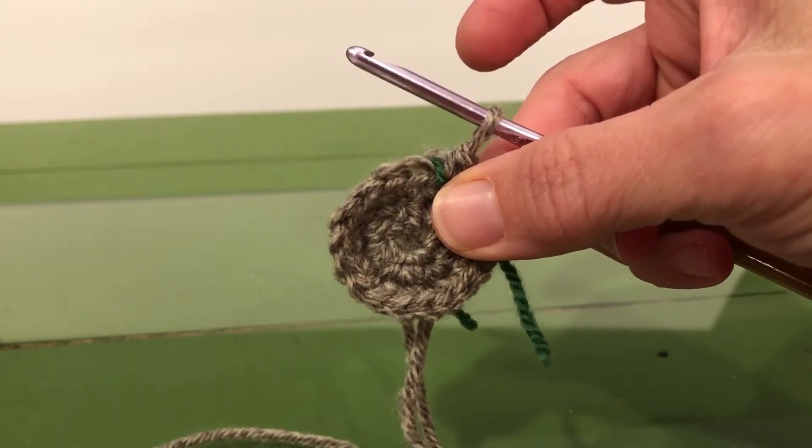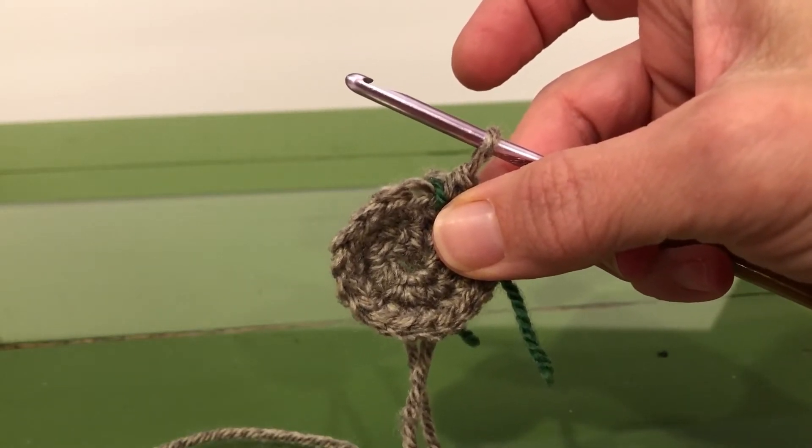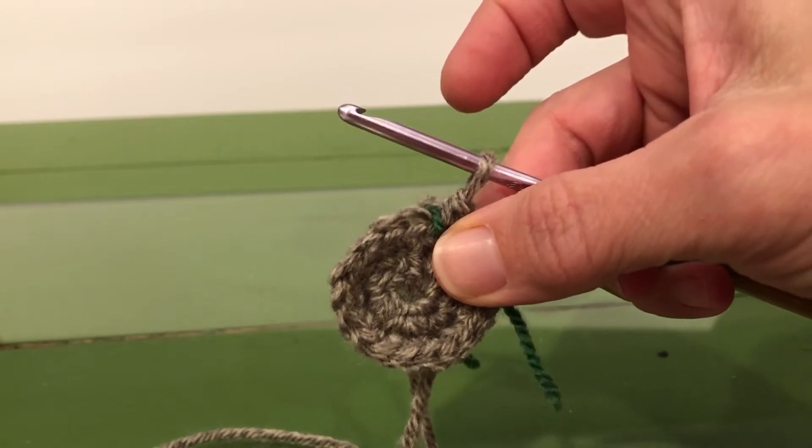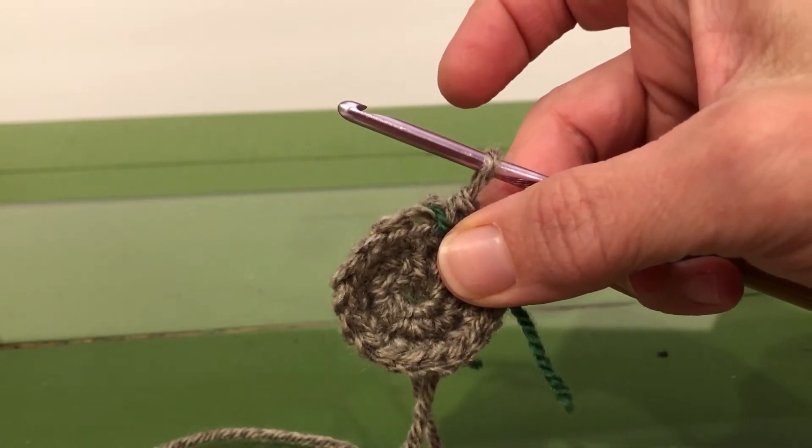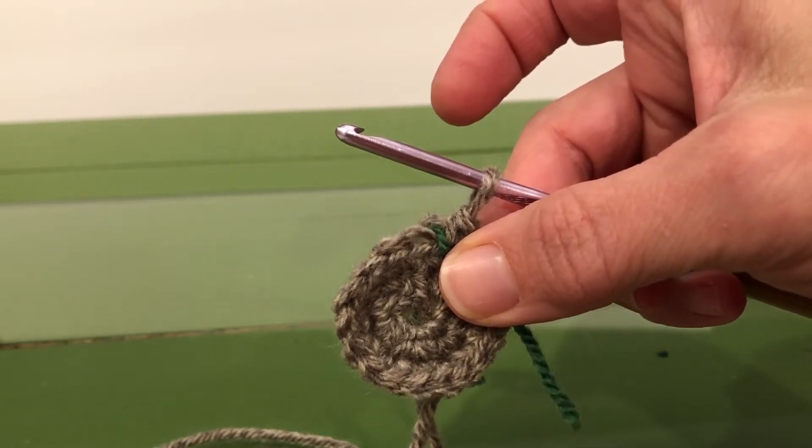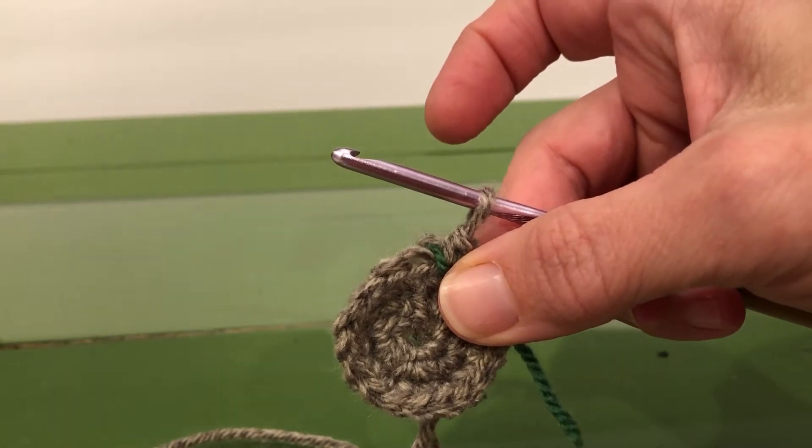Here we are again, continuing with the Koala crochet pattern. We're on row 4, and we're going to work in the back loops only.